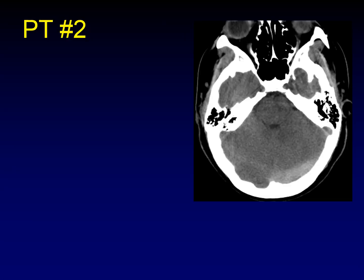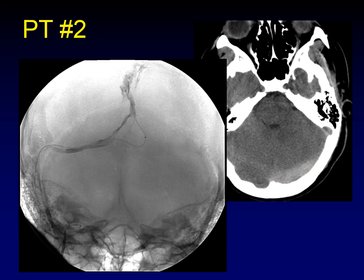Now let's look at patient number two — maybe she'll be okay too. On this unenhanced CT, there is increased density along the transverse sinus. That's acute thrombus. The conventional venography shows flow down the superior sagittal sinus and into the right transverse sinus, but absolutely no flow into the left transverse sinus. This is acute clot.